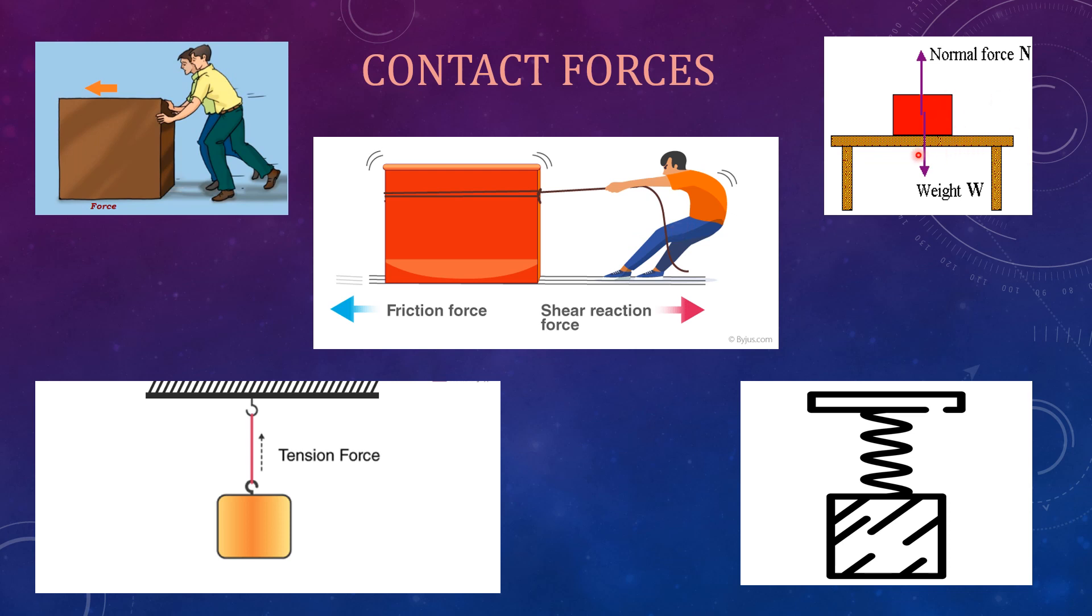This is a normal force. This object is placed on the table. This object is creating, is exerting the force on the table and the table also exerts the equal force on the object. That's why the object is lying on the table.